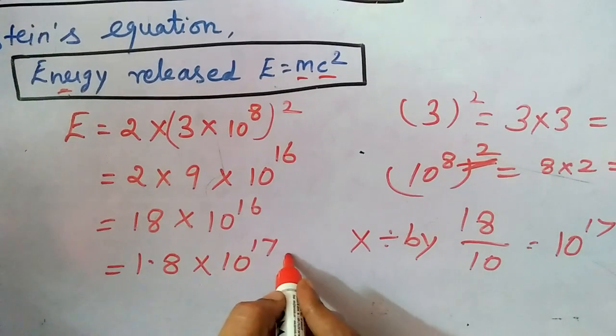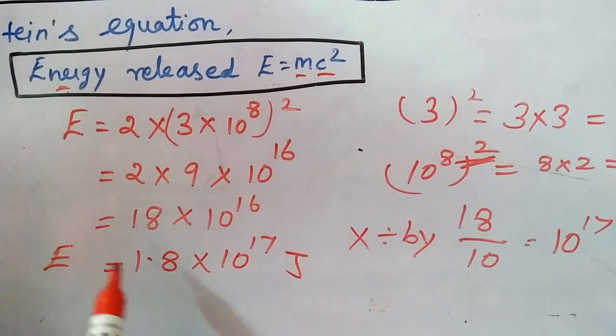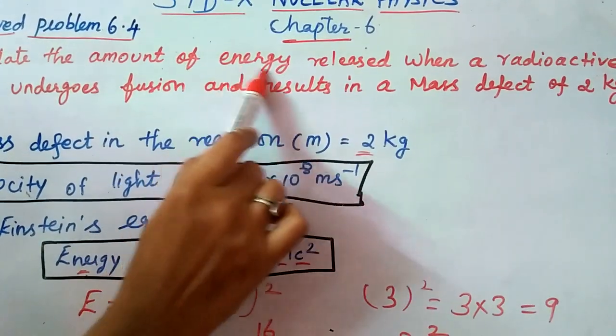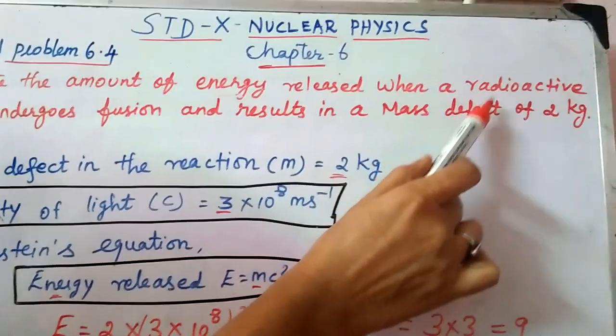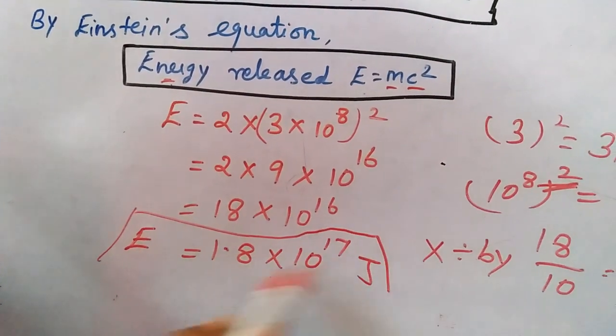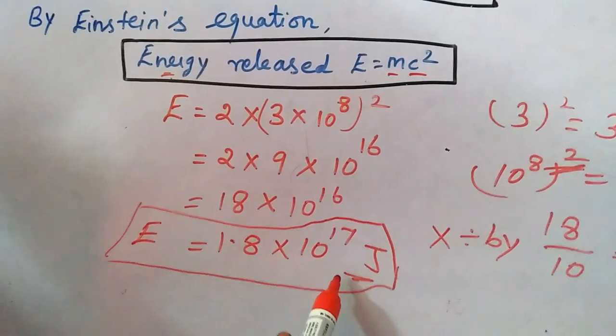What is the energy unit? The unit of energy is the Joule. Energy E equals what? Energy released. So E, energy E equals 1.8 into 10 to the power of 17 Joule. This is the answer.